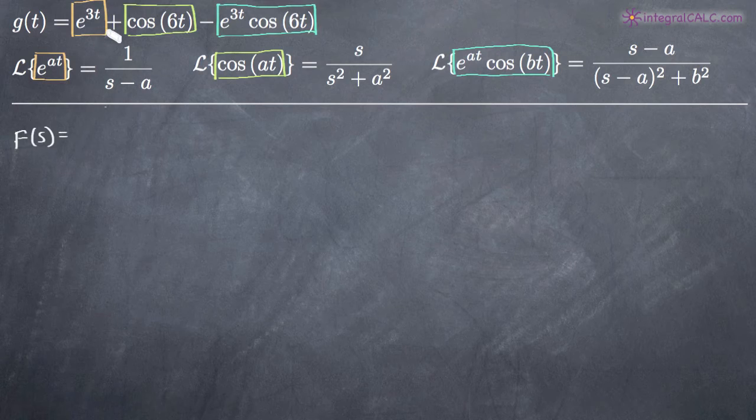To perform the Laplace transform here, we're going to look at our first term e to the 3t. We can see that a is equal to 3. So our Laplace transform according to the formula is going to be 1 over s minus 3. Keep in mind that the s is always going to stay. You're only going to be plugging in for a and b. So that's our first term.